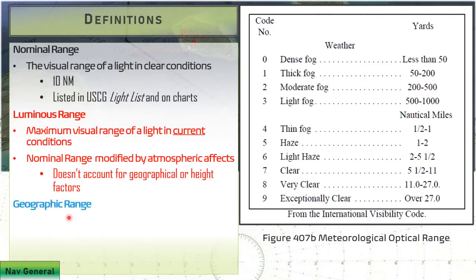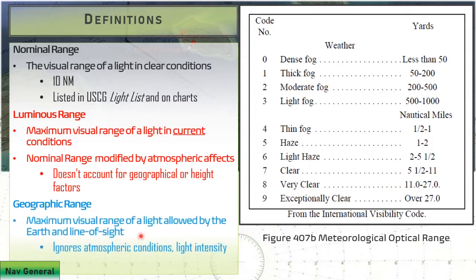That's going to be a separate component, the geographic range of the light. Geographic range is the maximum visual range determined by the characteristics of the earth and line of sight. That's where our height of eye and the height of the light come into play, and this ignores the atmospheric conditions. These are two different sides of the same coin.